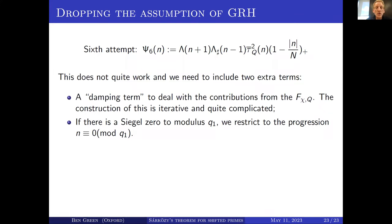There could be a Siegel zero — a really bad zero of a Dirichlet L-function very close to 1. If there is such a thing, we basically mod out right at the start by restricting to the progression 0 mod q₁, where q₁ is the modulus of such a Siegel zero.